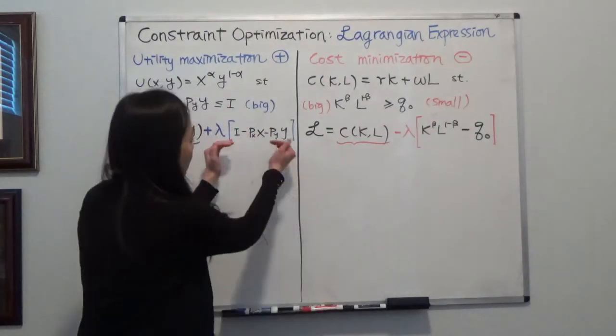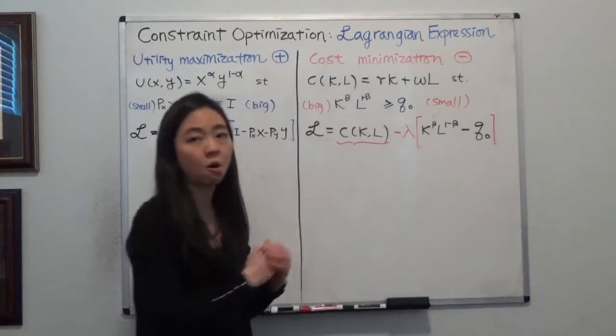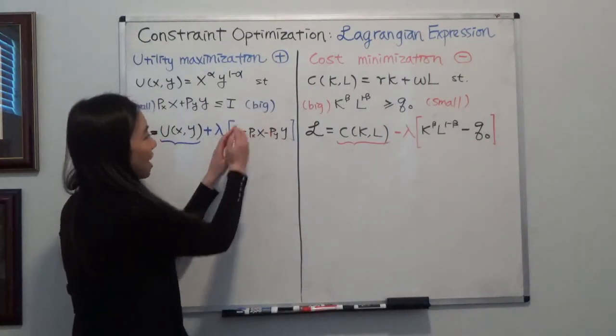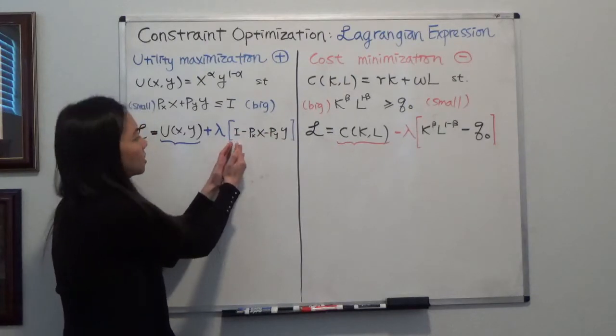And inside the bracket of your constraint, always put the thing that is large at the left-hand side. So what does that mean?